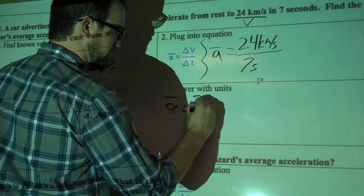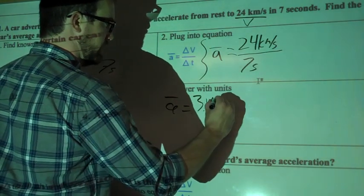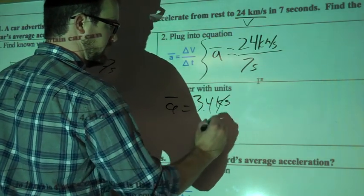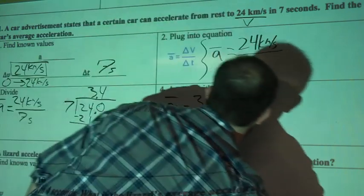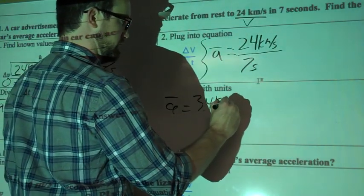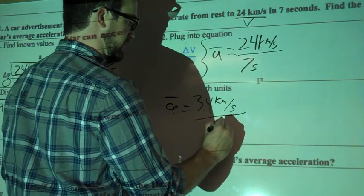and then at the top we had kilometers per second, right? And on the bottom, we're dividing by seconds, kilometers per second, and on the bottom we're dividing by seconds, okay?